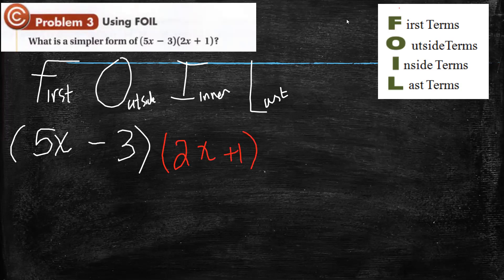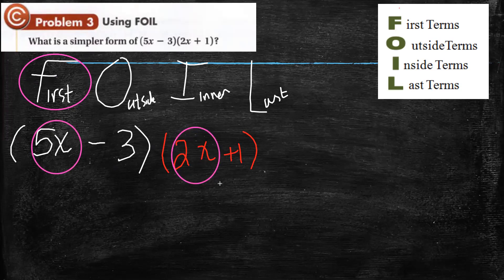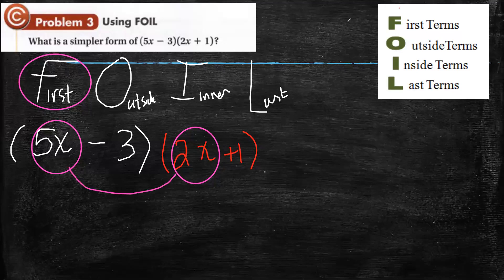I want you to look at the first binomial in white. F means first — the first monomial in the first binomial and the first monomial in the second binomial. I multiply them with each other: 5x times 2x equals 10x squared. This is the meaning of first.